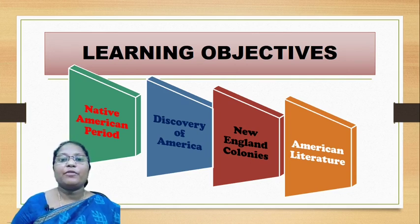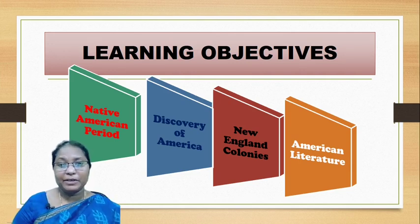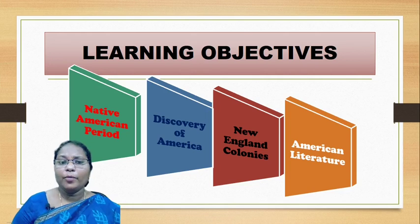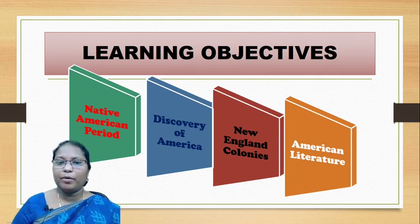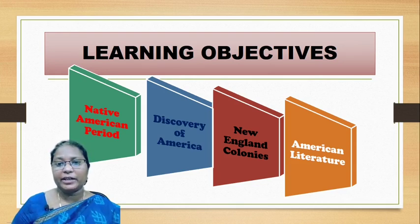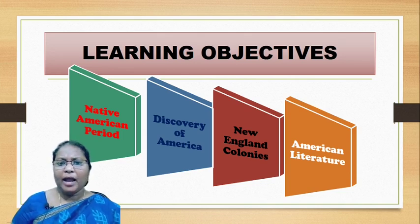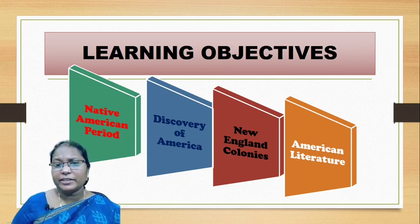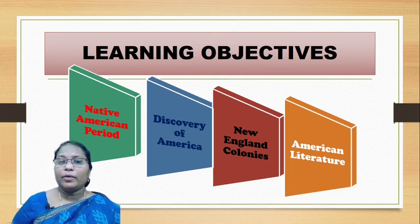The next topic is about the discovery of America — it is very interesting to deal with: who are the people who started expeditions to America, what was the aim behind its discovery, and how the nation got its title. The third topic is about New England colonies — how the newly discovered nation established itself as colonies of England, what nations began to dominate this newly discovered land, and the reasons behind establishing these colonies.